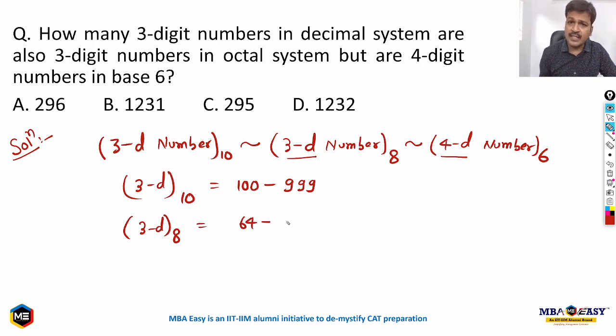And it goes up to 8 cube minus 1, which is 511. So these are the numbers in decimal system which when converted into base 8 will give the range of 3-digit numbers in base 8. If you don't understand the idea behind it, I strongly urge you to watch the previous video, Question of the Day for 18th October.